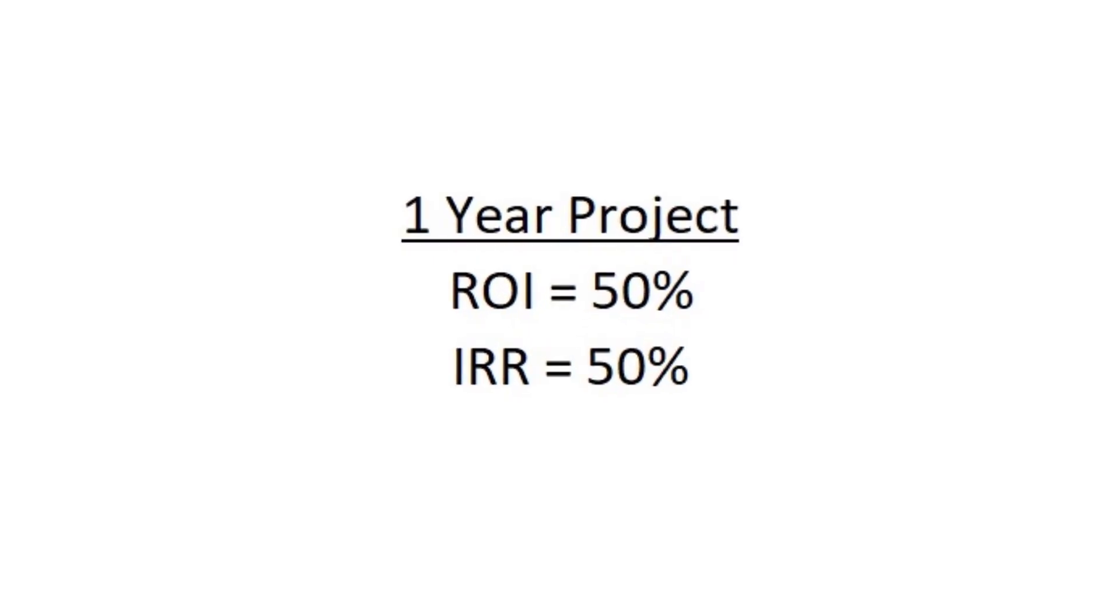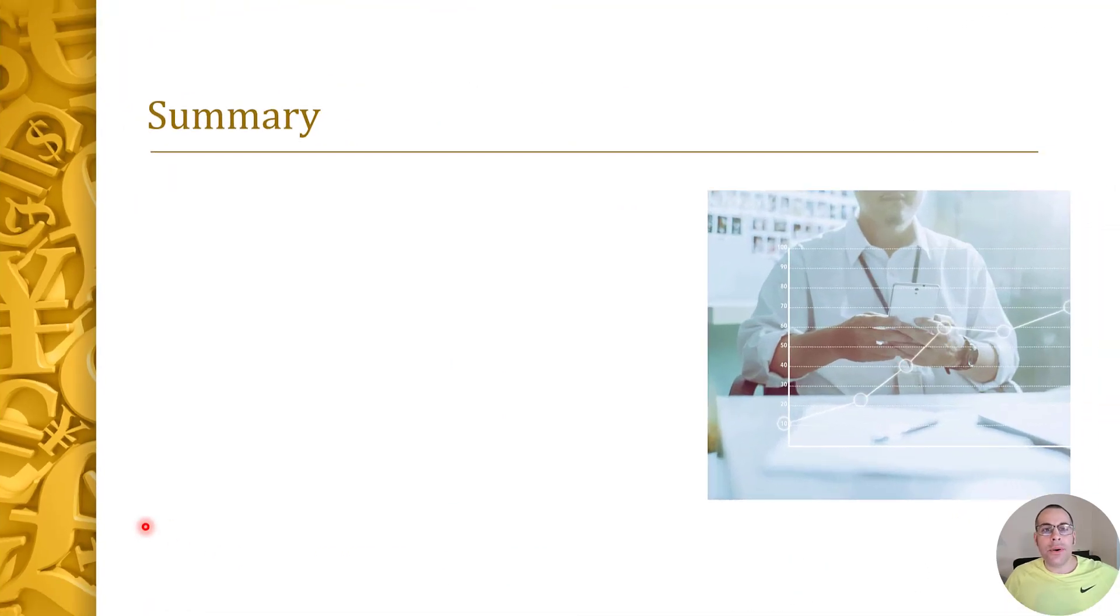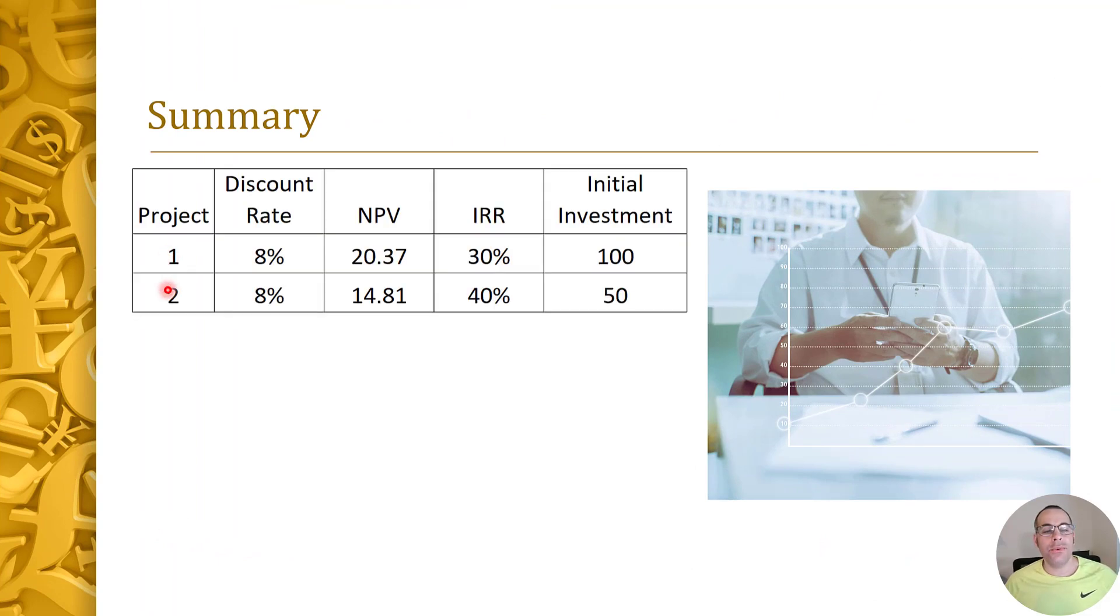Let's summarize everything. Both projects have a discount rate of eight percent. Coming up with an appropriate discount rate can be challenging for certain investments. You have to take into account opportunity cost, inflation, investment risk. The higher the discount rate, the higher the perceived risk of the investment, and the lower the discount rate, the lower the perceived risk of the investment. I use the same discount rate so we can compare the two projects. If the projects you're looking at have different discount rates, you have to take that into account when doing your analysis.